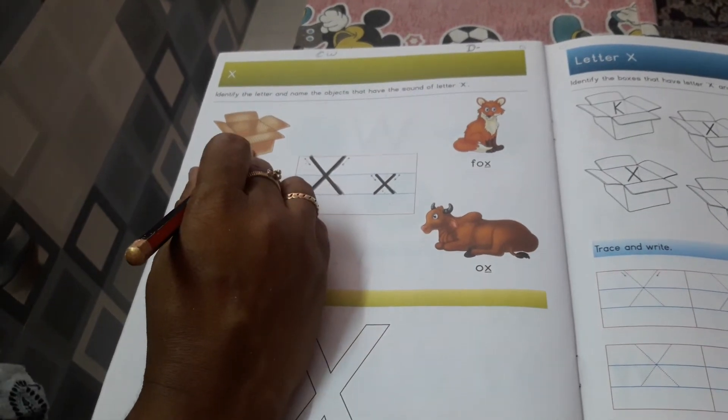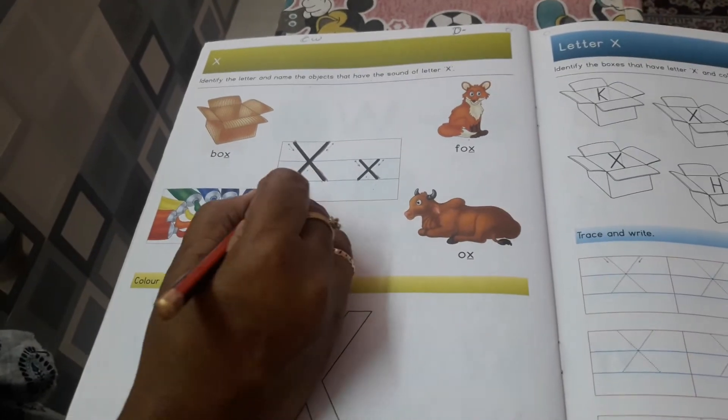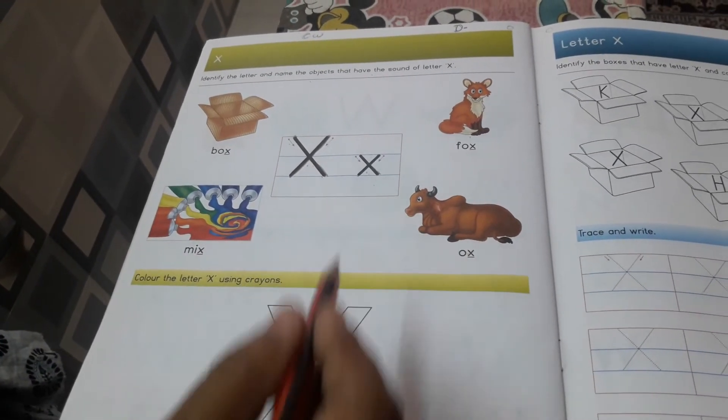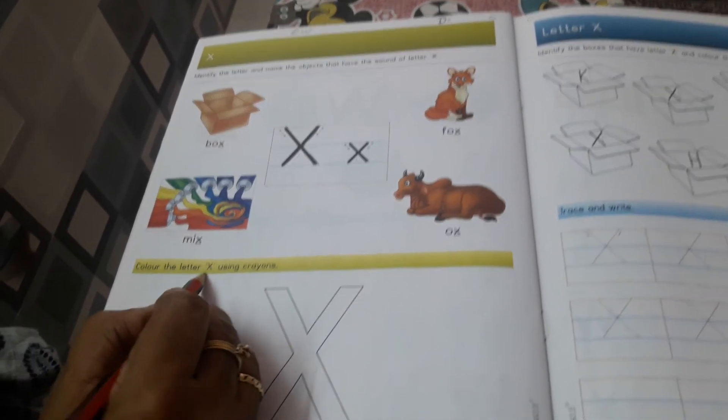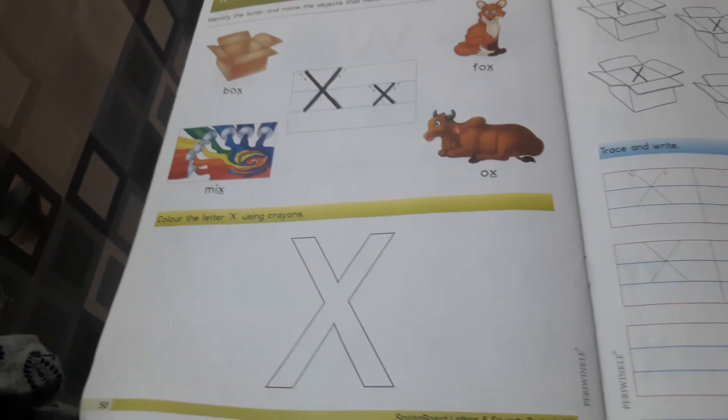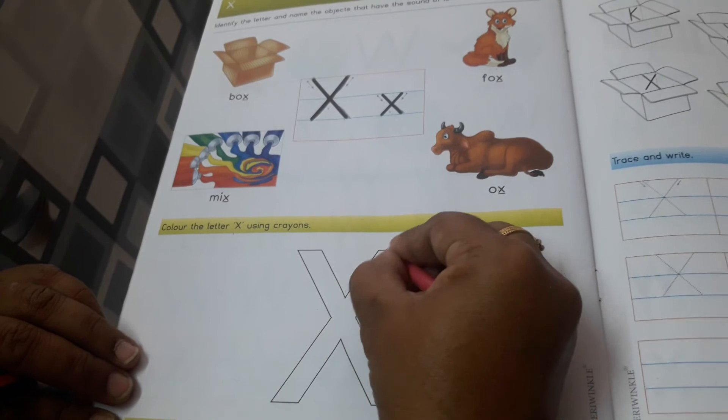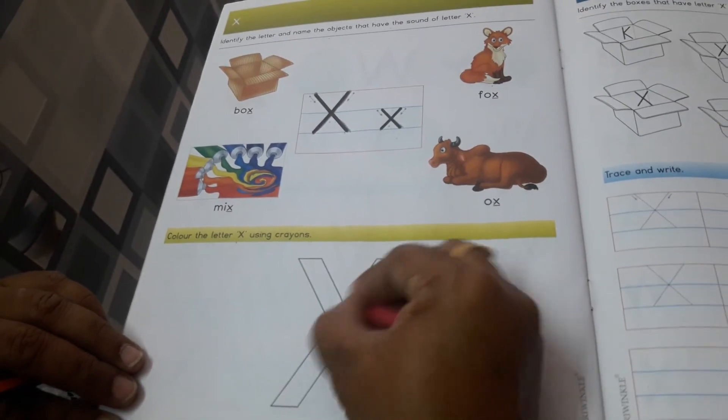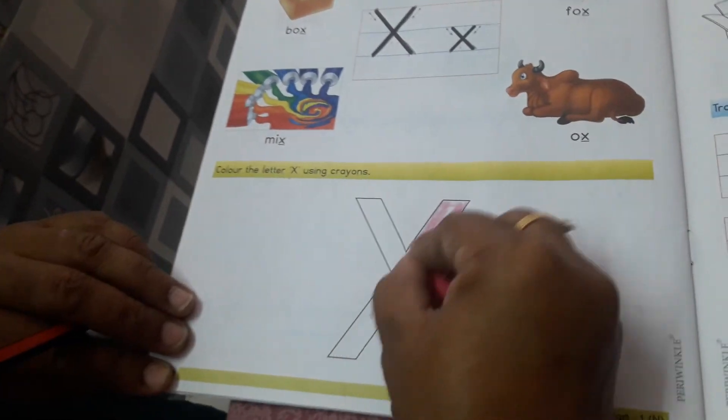X for box. X for fox. X for mix. X for ox. Color the letter X using crayons. Here we are given X, we have to color it. Okay? Let's start the colors. Colors is your choice. Whichever color you like, you can do with that color.